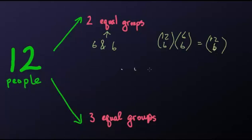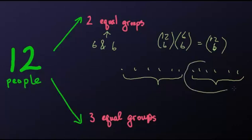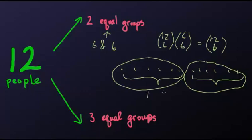This is actually not right. Suppose these are our twelve people. In our first C(12,6), we may have chosen these six people, and in our next C(6,6), we may have chosen these six people. But what if our first six people chosen were the other six? Then C(6,6) would give us the remaining ones. These are the exact same people — one may be in group one, the other in group two — but that's still the same split. Choosing the left six first and then the right six is the same as choosing the right six first, so we have to divide C(12,6) by two.